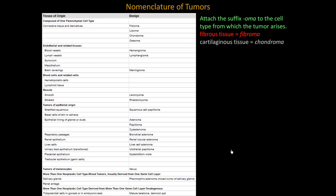Let's talk about nomenclature. This is important because in the name it will tell you whether it's benign or malignant and from which tissue it's originating. To name a benign tumor, you attach the suffix -oma to the cell type from which the tumor arises. So a fibroma would be a benign tumor of the fibrous tissue.